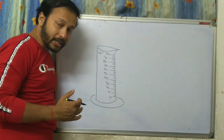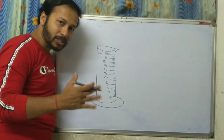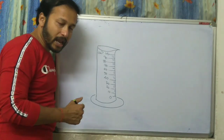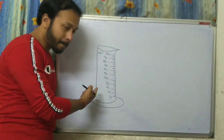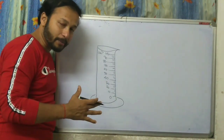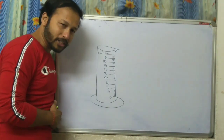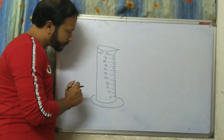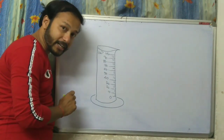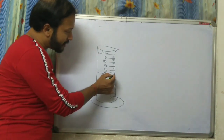Our target is to find the volume of the solid, because the mass we can calculate using the physical balance and the volume we get using the measuring cylinder. Now, we pour water into the measuring cylinder — say the water level is at 50 centimeter cube.